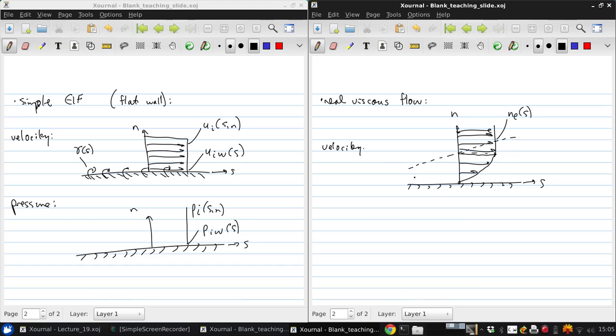So this is the edge of the boundary layer. So then here we have U of S and N, and at the edge of the boundary layer, we have U of S.